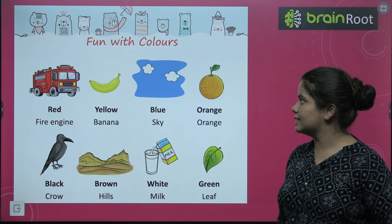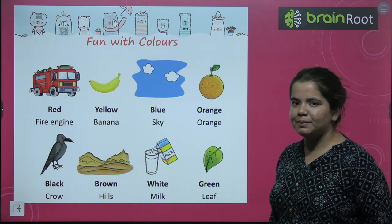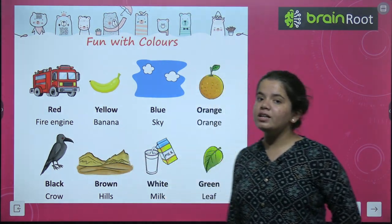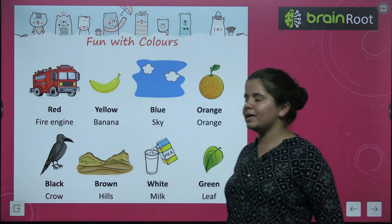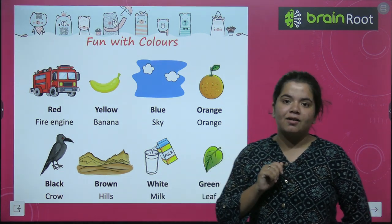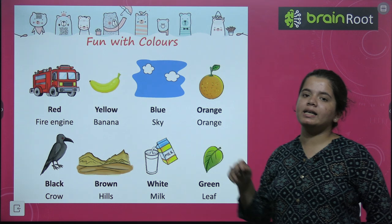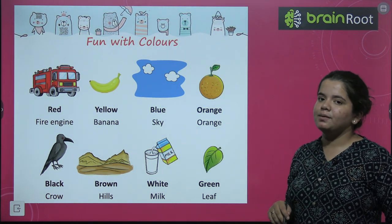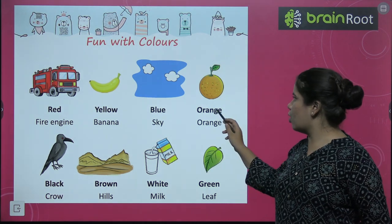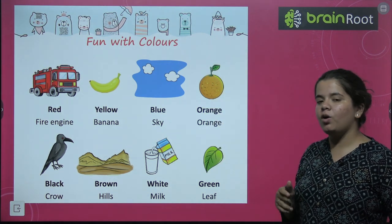Fun with colors — we will now learn about colors. First we have red color — red color is like a fire engine. Next we have yellow color — yellow color is like a banana. Next is blue color — B-L-U-E, blue — like the sky. Orange — orange color is a fruit whose name is orange.